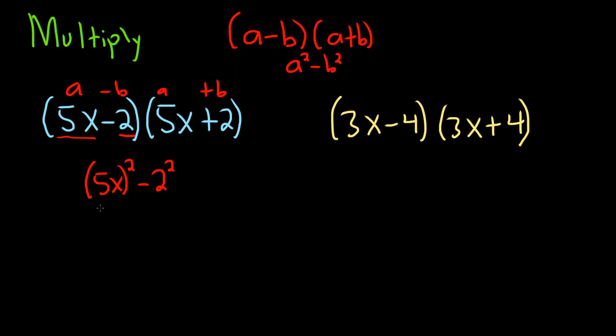When you square 5x, you square the 5 which gives you 25, and you square the x which gives you x². Then minus 2 squared which is 4. That would be the answer to the first one: 25x² - 4.